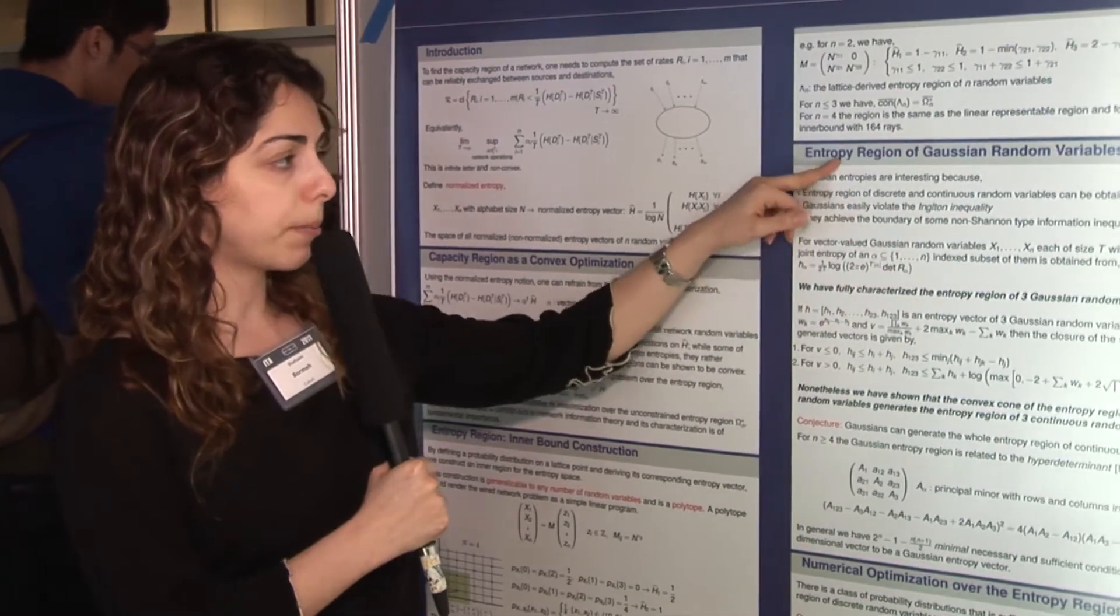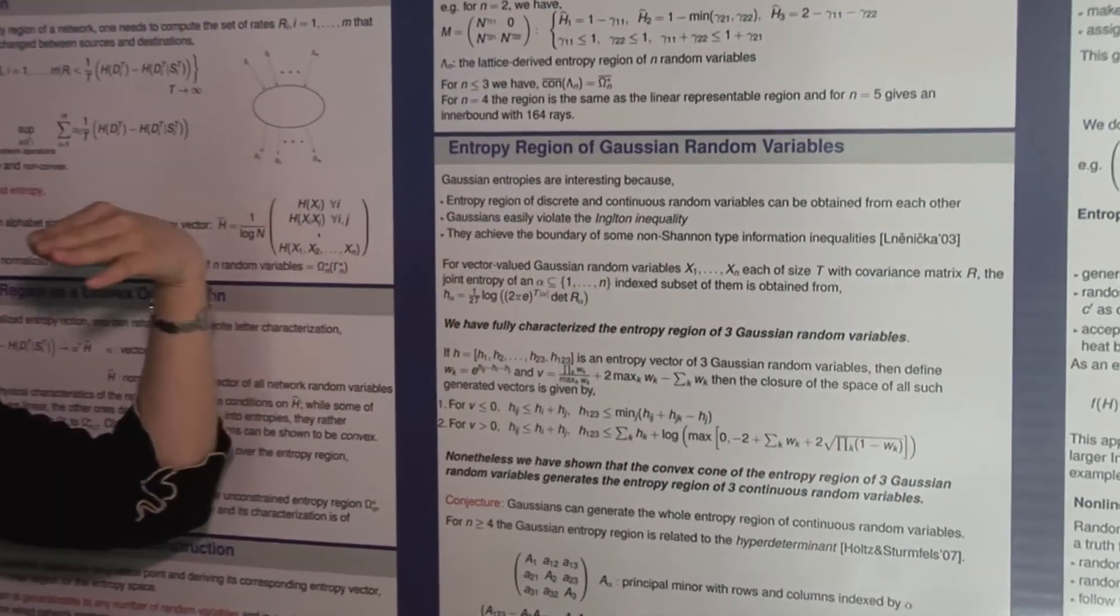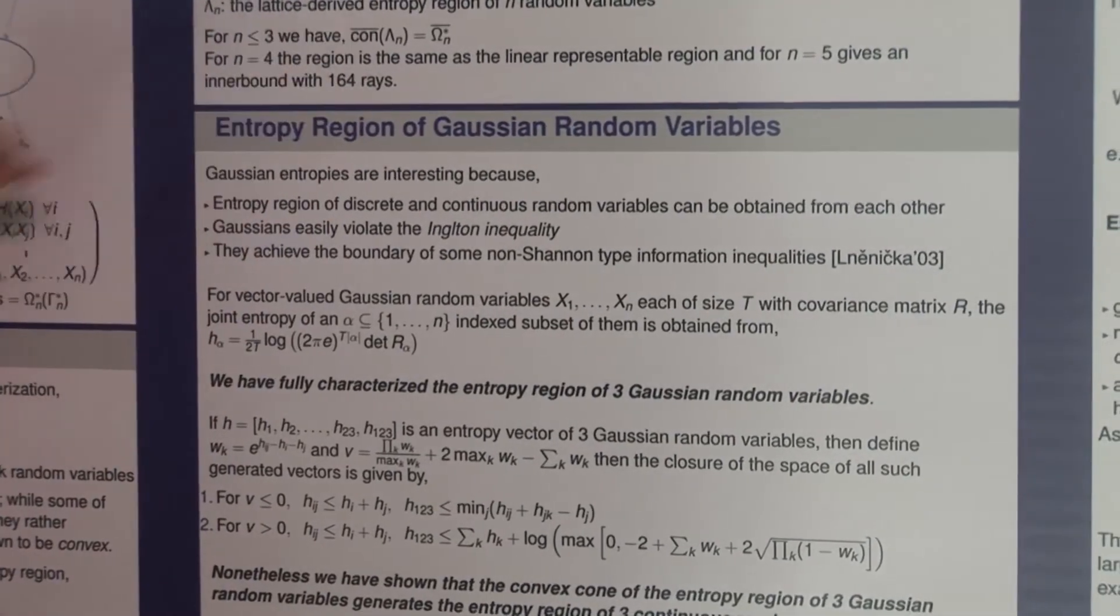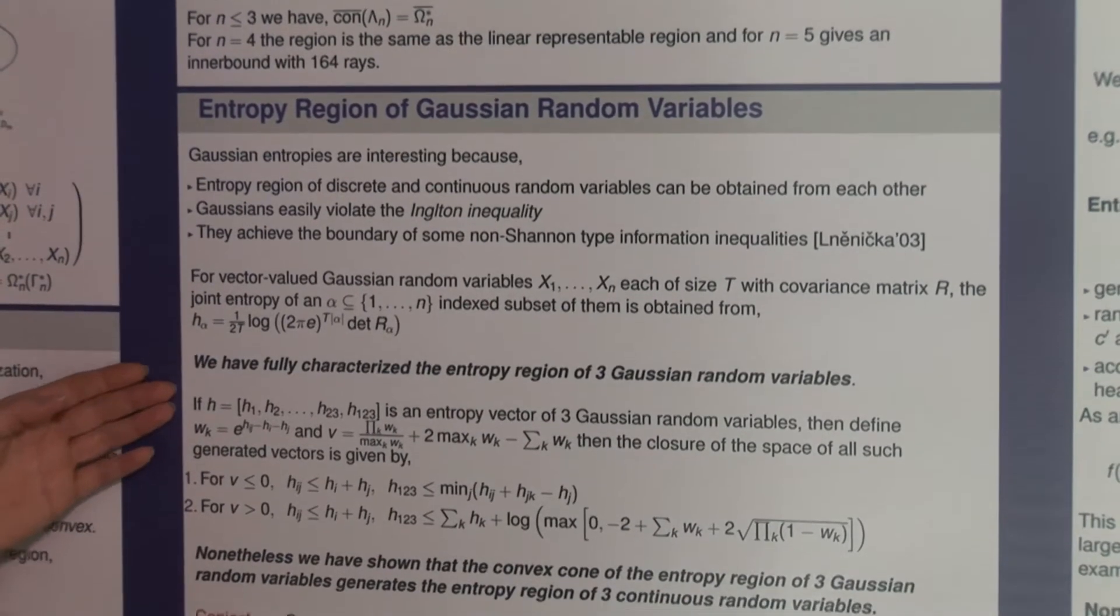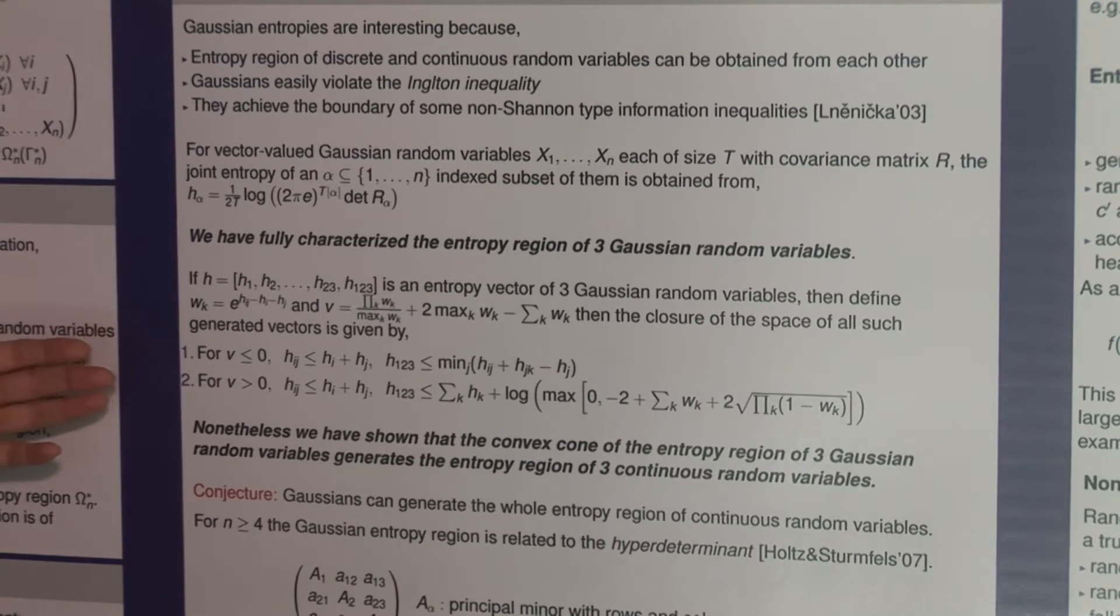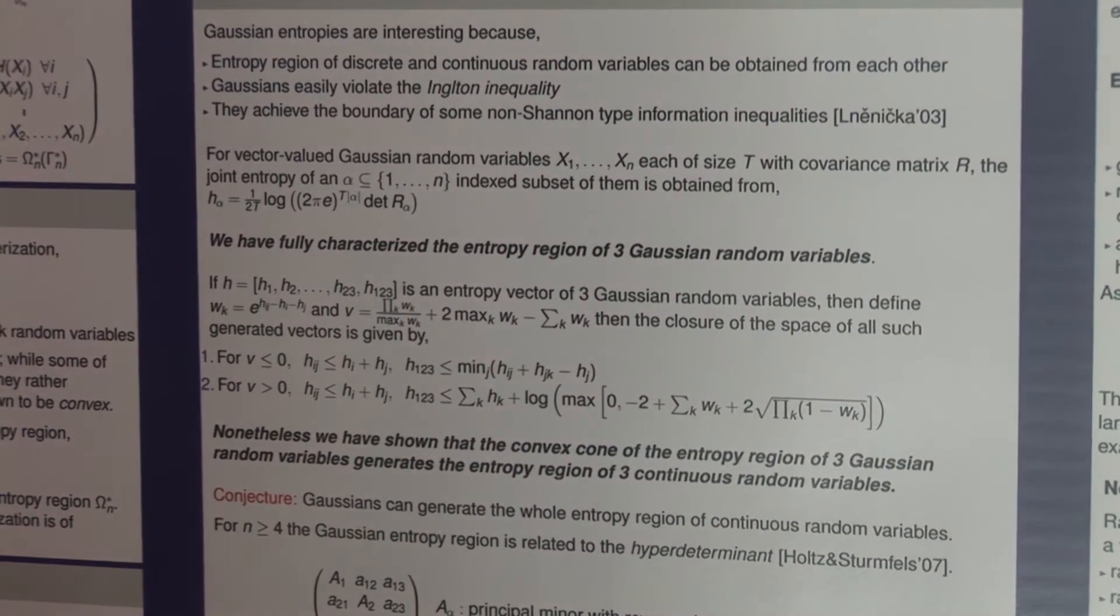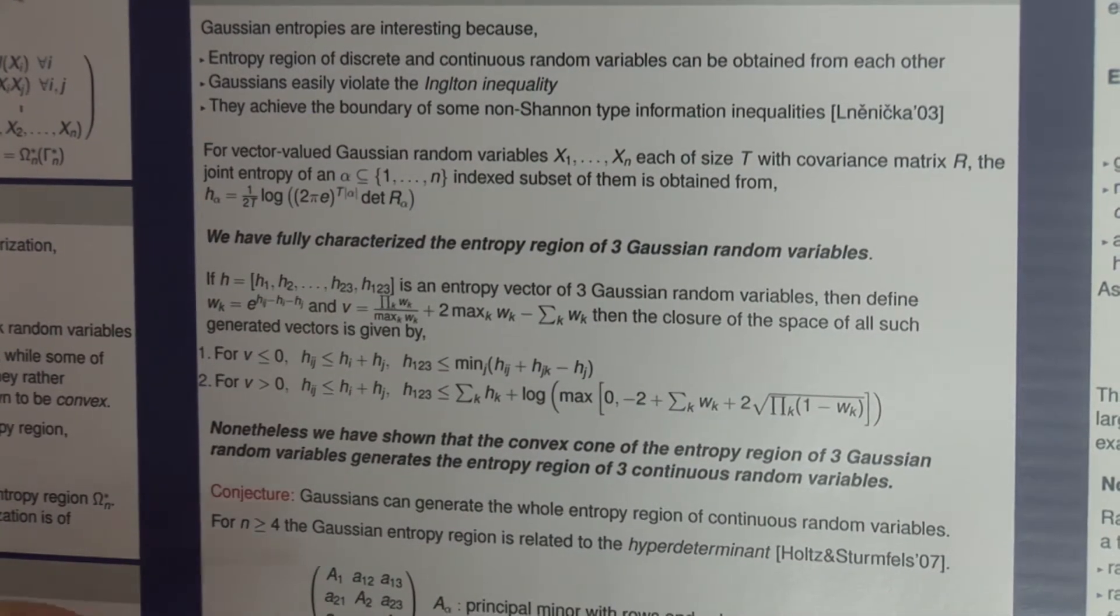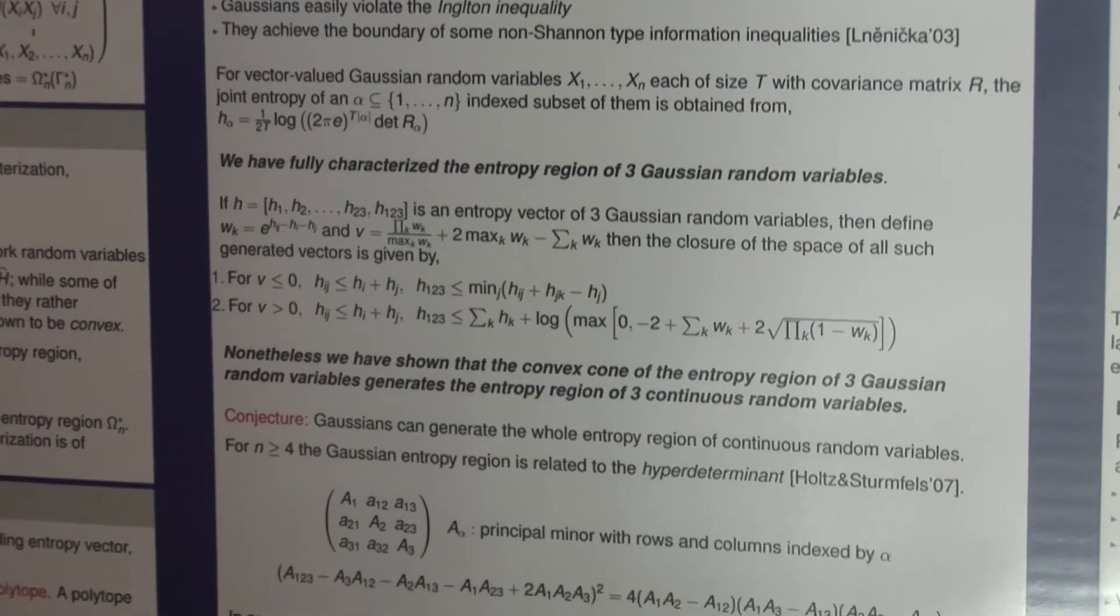Then we study the entropy region through Gaussian random variables. Among continuous random variables we study the Gaussian random variables. We have fully characterized the entropy region of three jointly Gaussian random variables, and more interestingly we have shown that the convex cone of the region of three jointly Gaussian random variables gives the whole entropy region of three arbitrary distributed random variables.